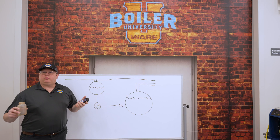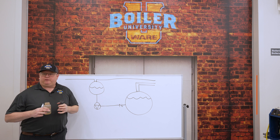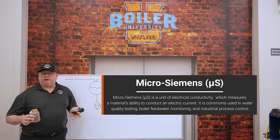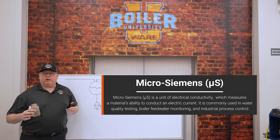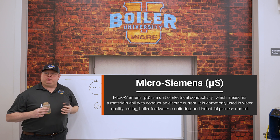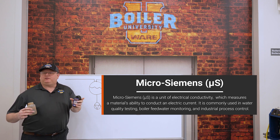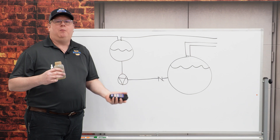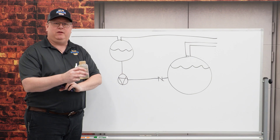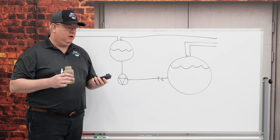If we're going to control conductivity on a boiler, the first thing we need to do is measure it, so we know the value of the conductivity in the boiler. The unit we often use for that is micro siemens. It's a resistance unit, and basically the more dissolved solids we have in the boiler, the higher the conductivity will be.